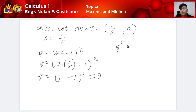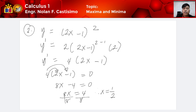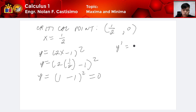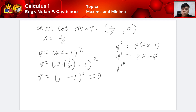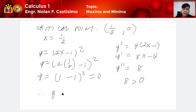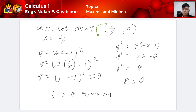The first derivative is y prime = 8x minus 4. Taking the second derivative, y double prime is equivalent to 8, wherein 8 is greater than 0. Therefore, y is a minimum. The critical point is (1/2, 0).